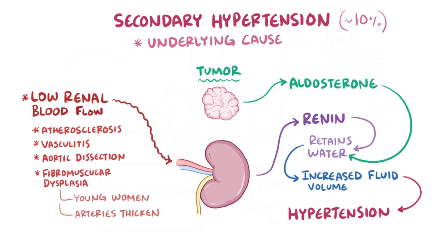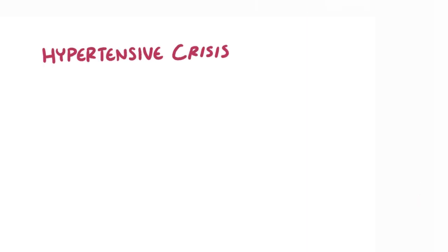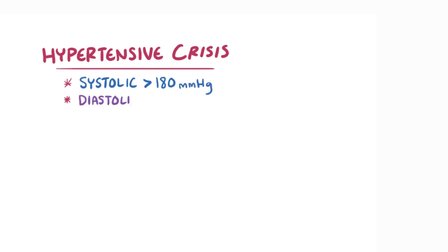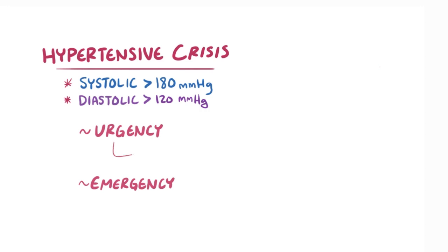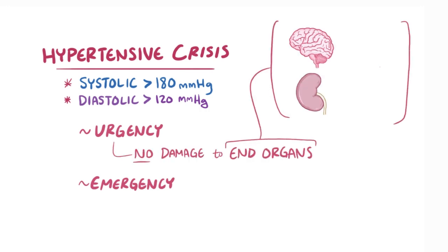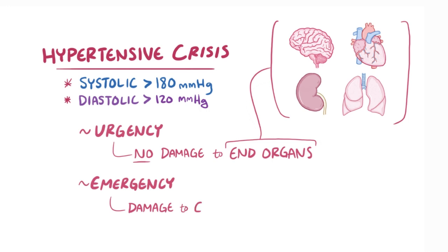Finally, if the blood pressure gets really high really fast, it's referred to as hypertensive crisis. It involves a systolic pressure greater than 180 mmHg or a diastolic pressure greater than 120 mmHg. Hypertensive crisis can be further split into hypertensive urgency and hypertensive emergency. With hypertensive urgency, there hasn't yet been damage to end organs, like the brain, kidneys, heart, and lungs. In hypertensive emergency, there has been shown to be evidence of damage to end organs.